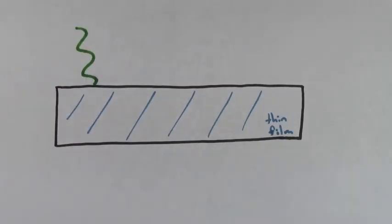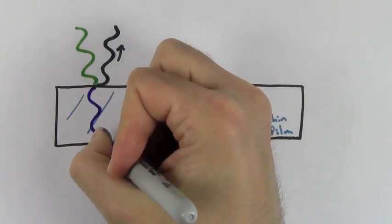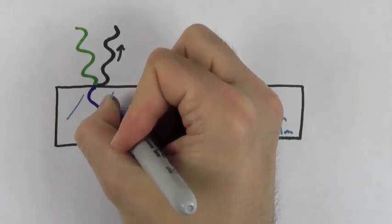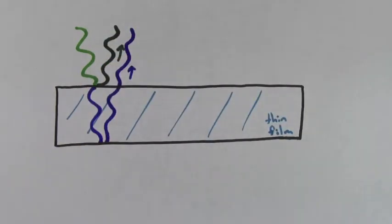In thin film interference problems, light strikes the top of the thin film. Some of that light is reflected off the top and continues in the original medium. Some light continues through the thin film and reflects off the interface at the bottom. When the wave that bounced off the bottom overlaps the wave that bounced off the top, they interfere with each other — constructive if the peaks line up, destructive if the peak of one lines up with the valley of the other.